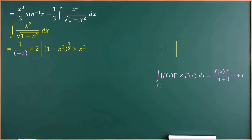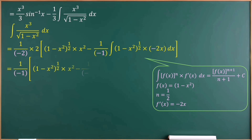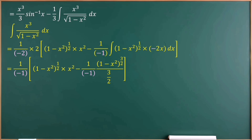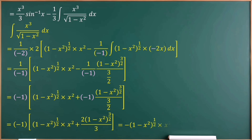In this case, f(x) equals 1 minus x squared, n equals one half, and f'(x) equals minus 2x. To get minus 2x we put a minus sign in the numerator, and to cancel that minus sign we put minus 1 in the denominator. We bring 1 over minus 1 outside the integral. The integral of (1 minus x squared) to the power of one half times minus 2x equals (1 minus x squared) to the power of 3 over 2, divided by 3 over 2. Since 1 over minus 1 equals minus 1, we remove the brackets and get: minus (1 minus x squared) to the power of one half times x squared, minus 2 times (1 minus x squared) to the power of 3 over 2 over 3.